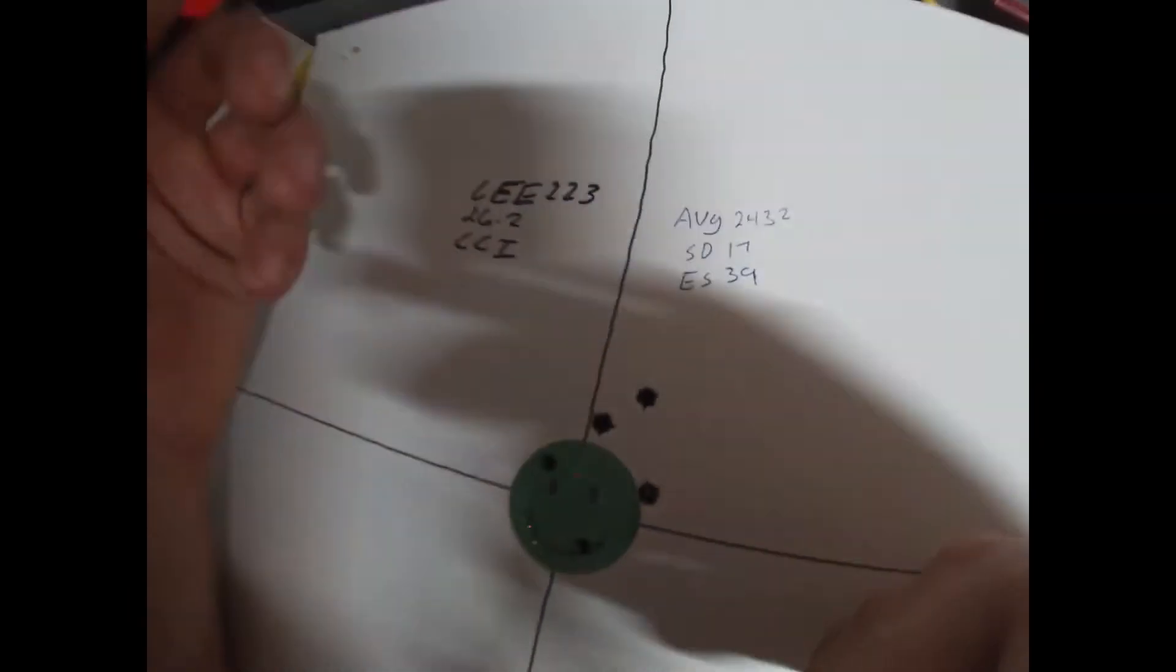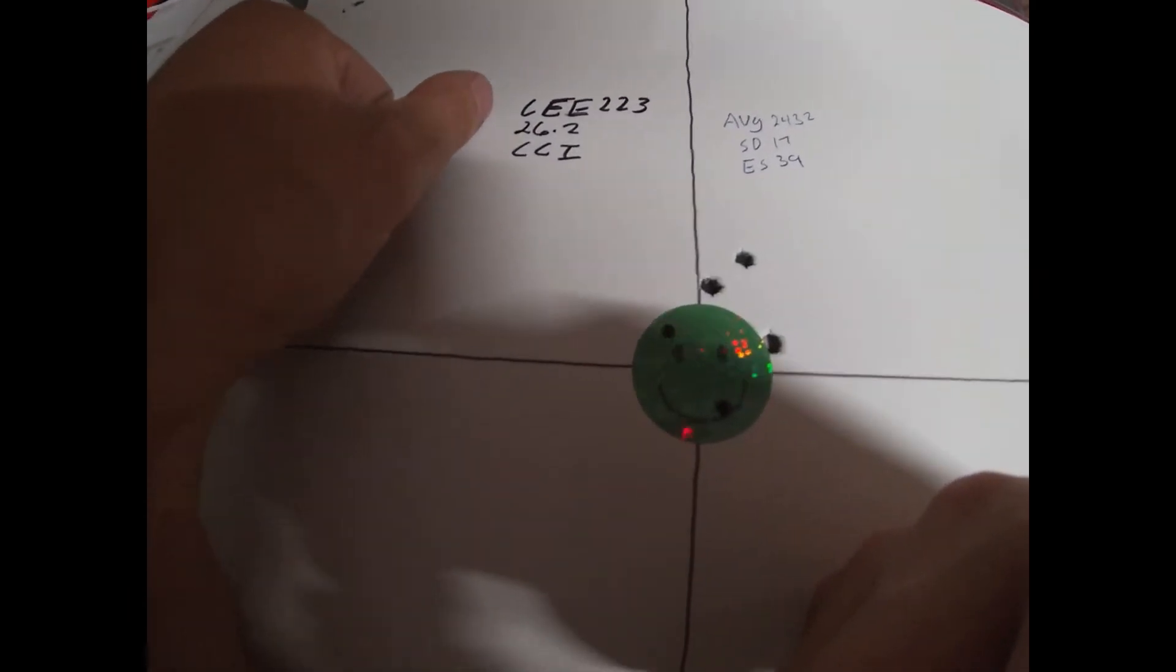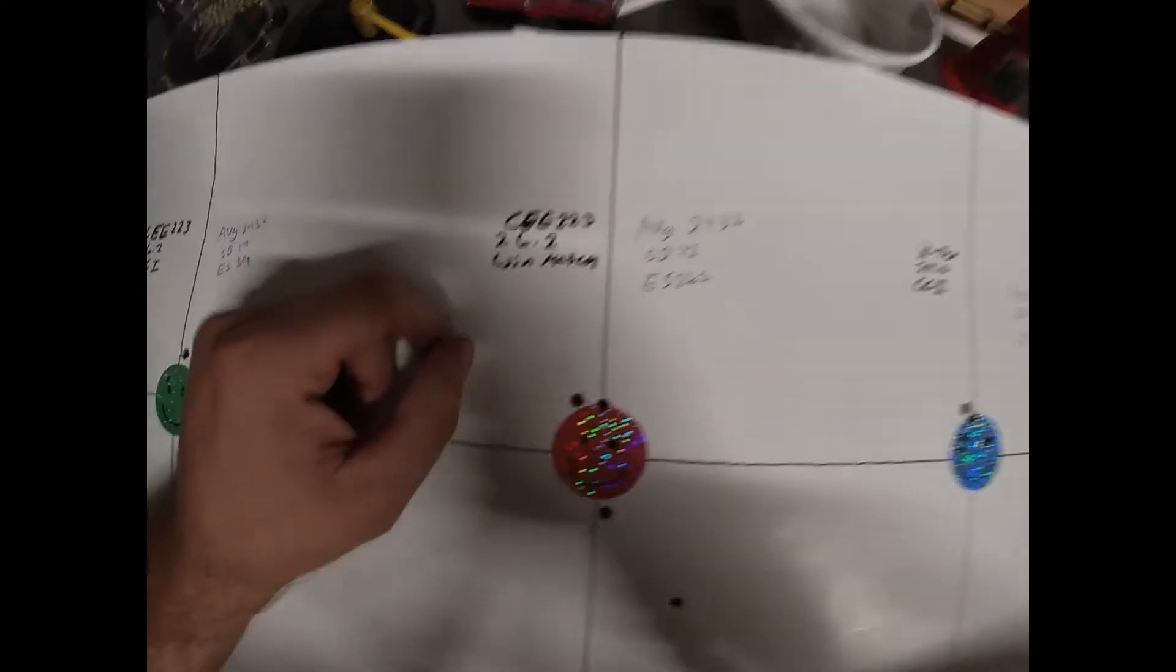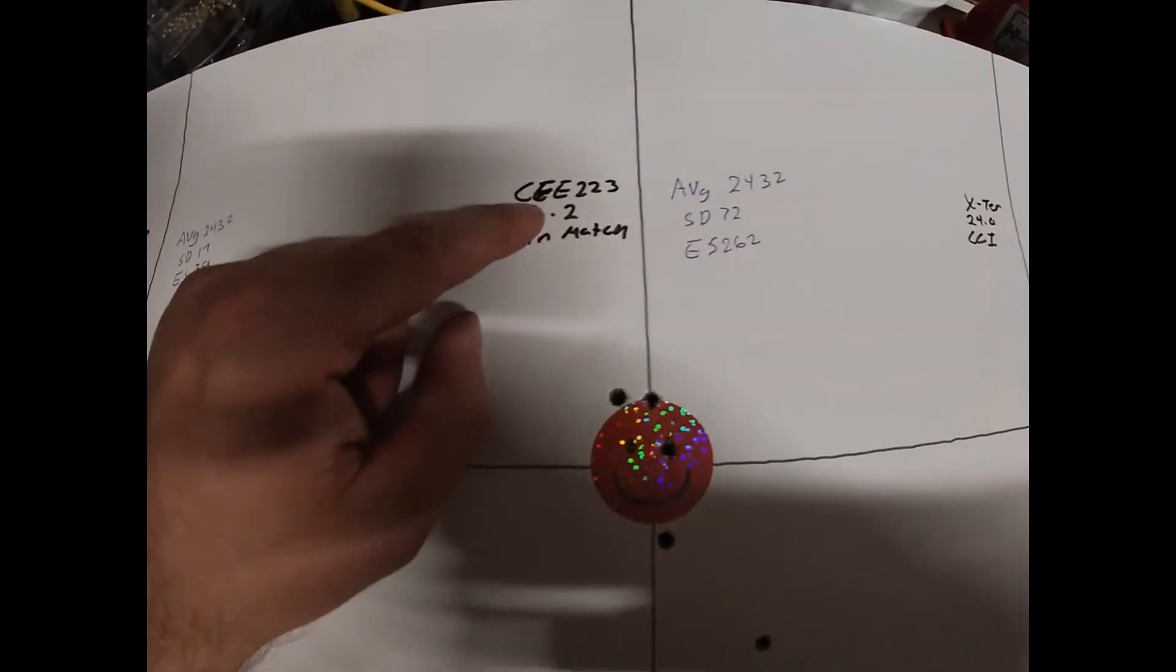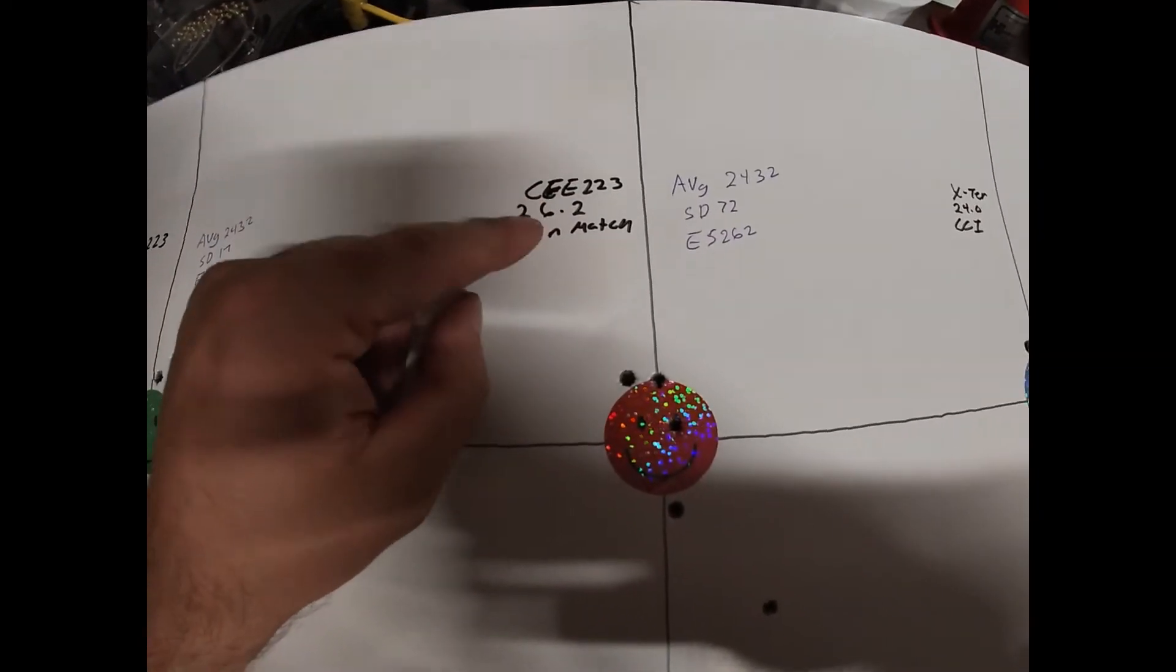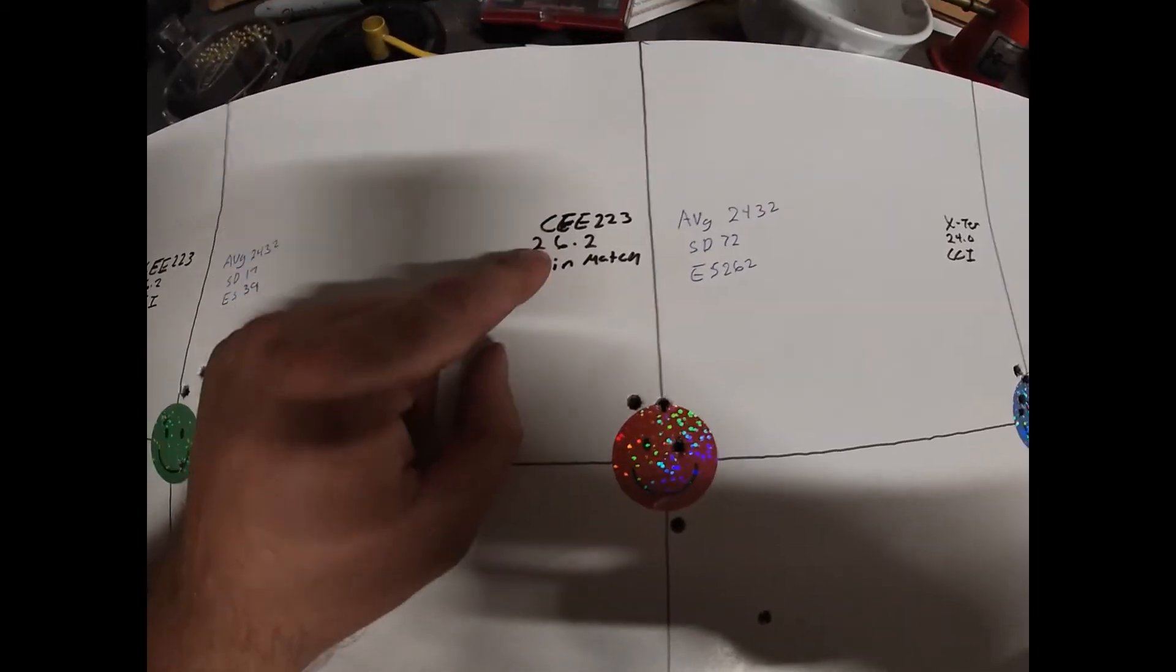There's our group, a little over an inch, probably an inch and a quarter group there. And then we got an average velocity of 2432, standard deviation of 17, an extreme spread of 39. Not bad, not bad, not bad. Then we come over to same powder, CFE 223, 26.2 grains, Winchester match.